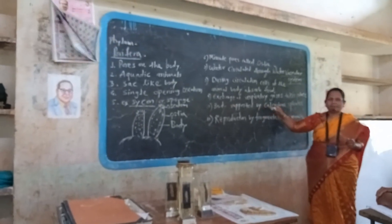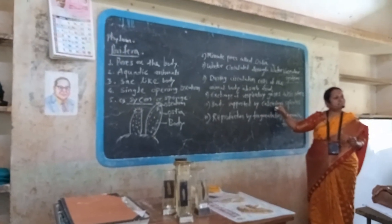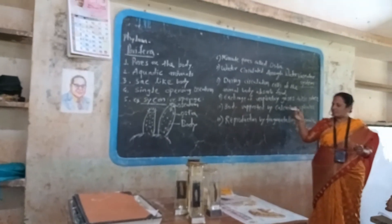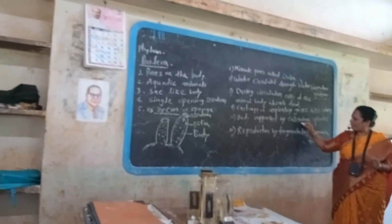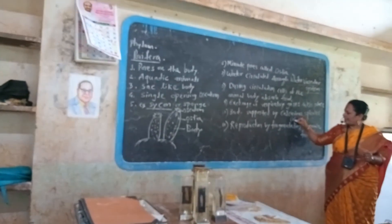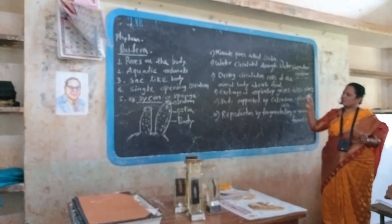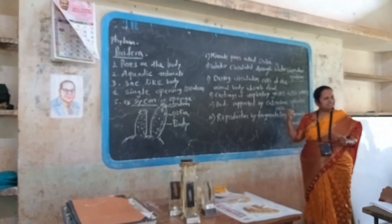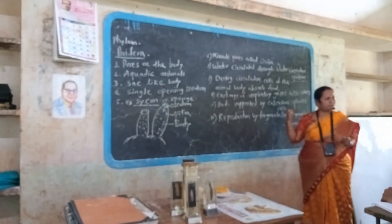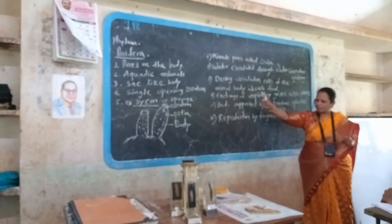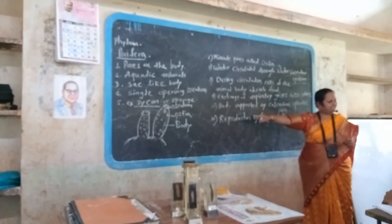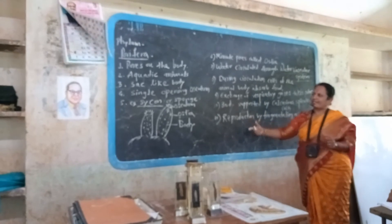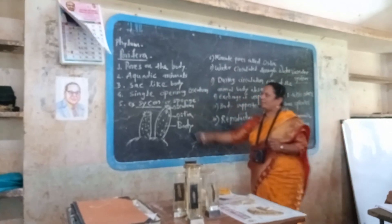The body is supported by calcareous spicules — calcareous because they are made of calcium carbonate. Reproduction of the sponges takes place by fragmentation or gemmule formation. These are the characteristics of this phylum.